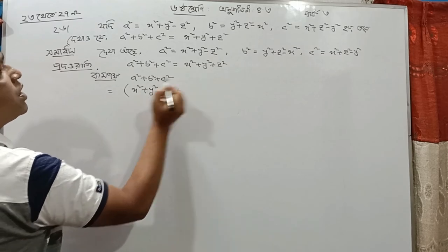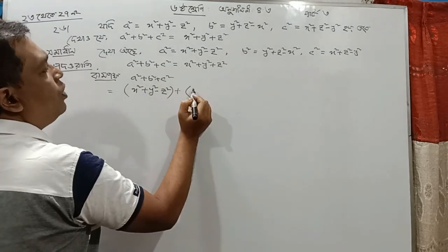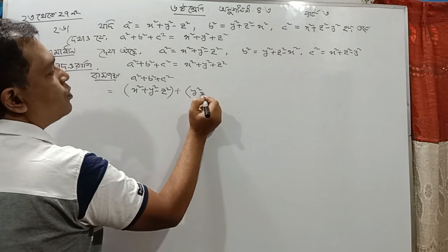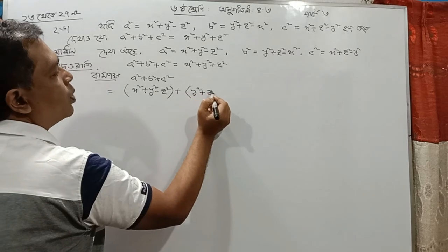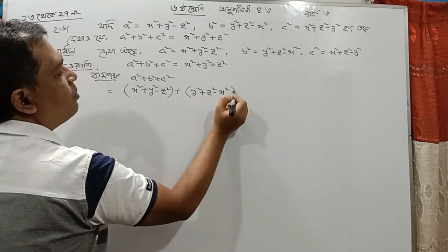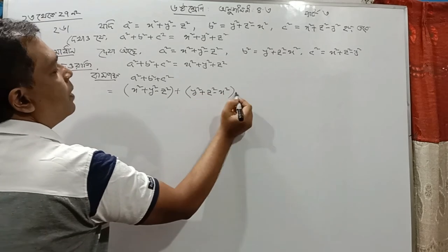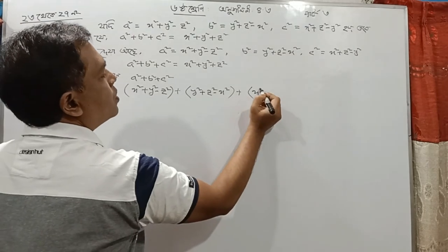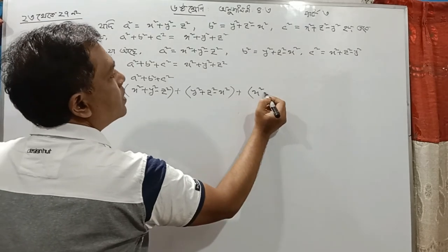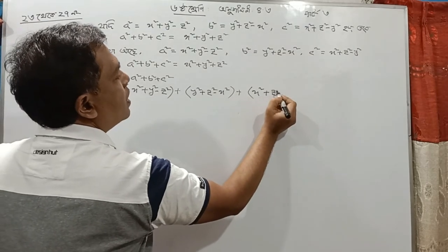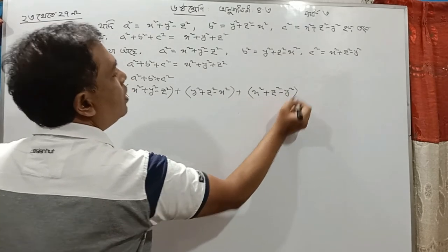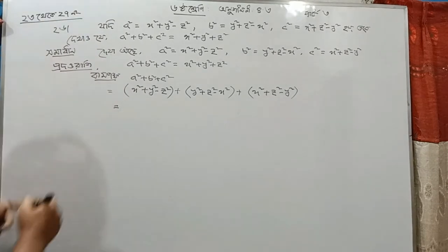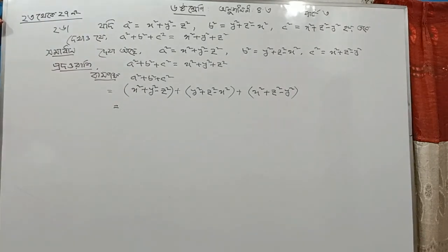We can change this new bracket. This is b². This is c². x² plus z² minus y². We got the bracket here. We can change this bracket by 2 seconds.